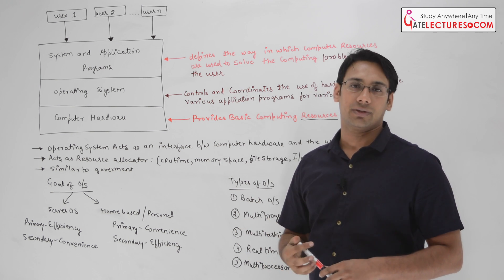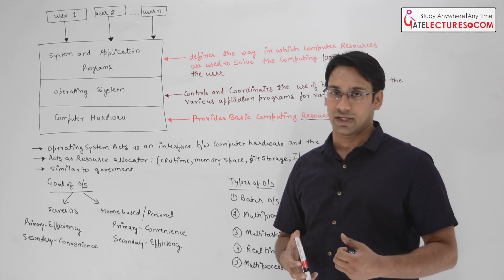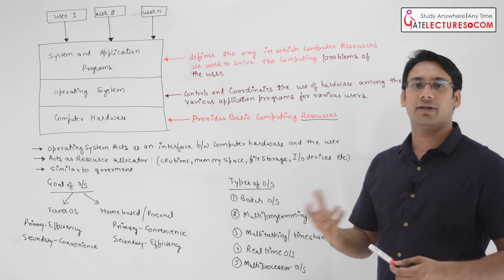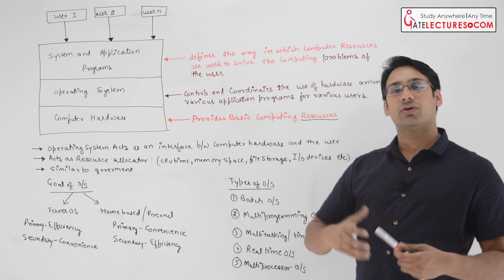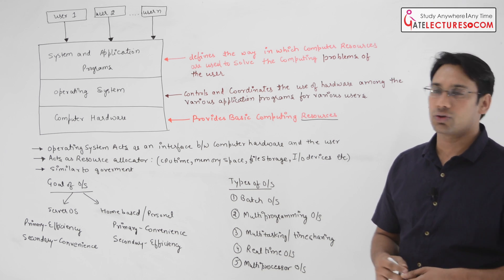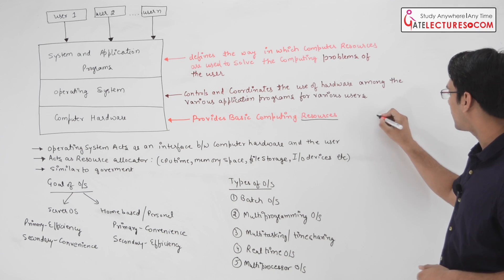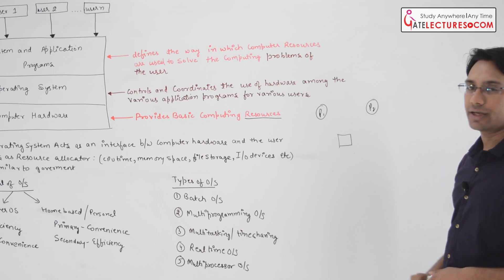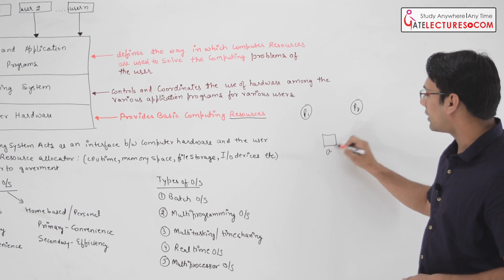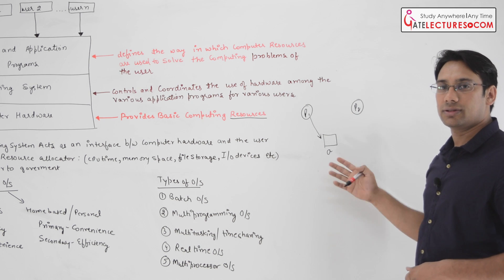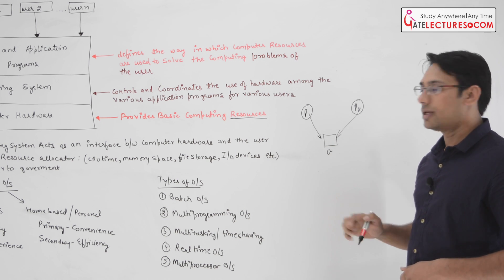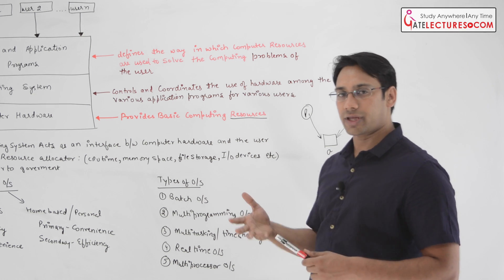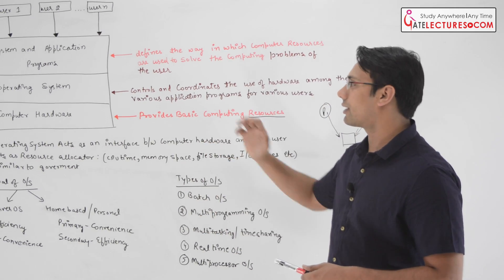There are various challenges which the operating system is going to face. One important challenge is synchronization. Synchronization is an important challenge and one of the important functionalities of the operating system is to manage resources. For example, suppose there are two processes P1 and P2. Now P1 and P2 both want to work on the same data variable. Because of this we get a lot of issues related to synchronization, and the operating system is there to solve these issues.